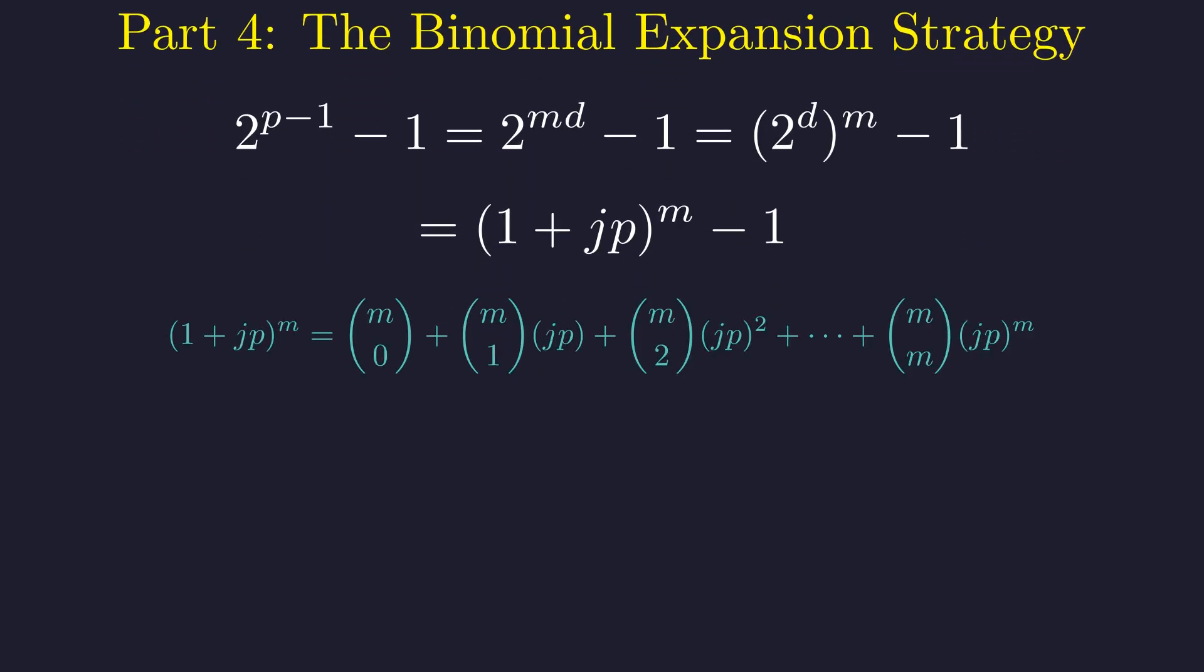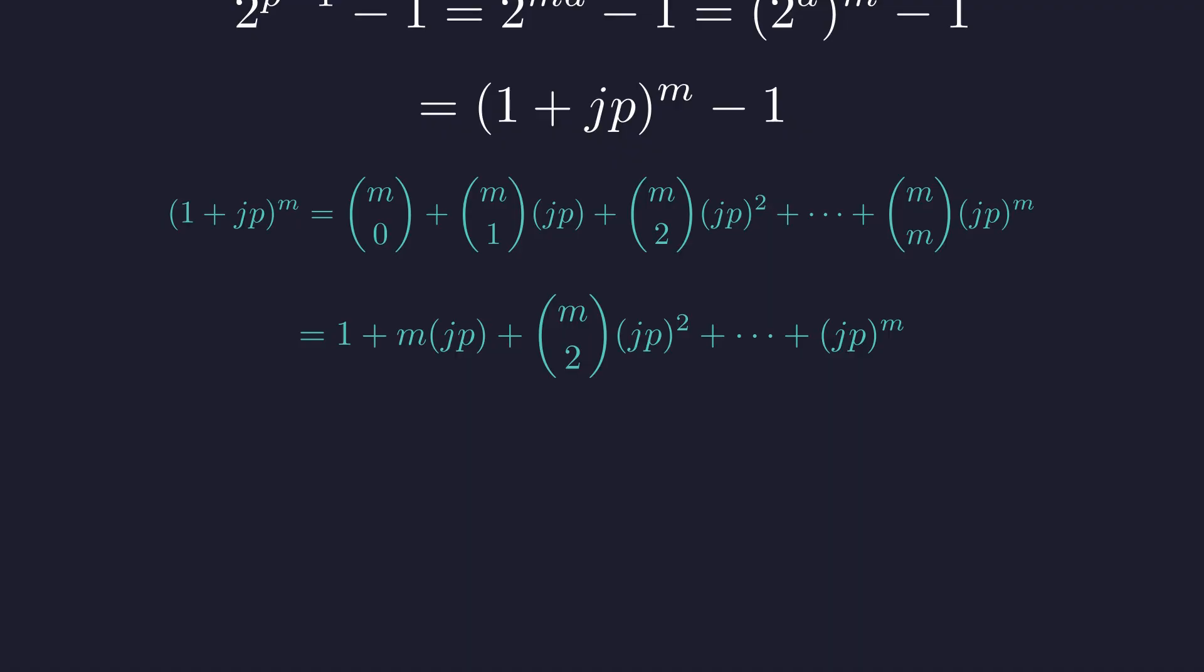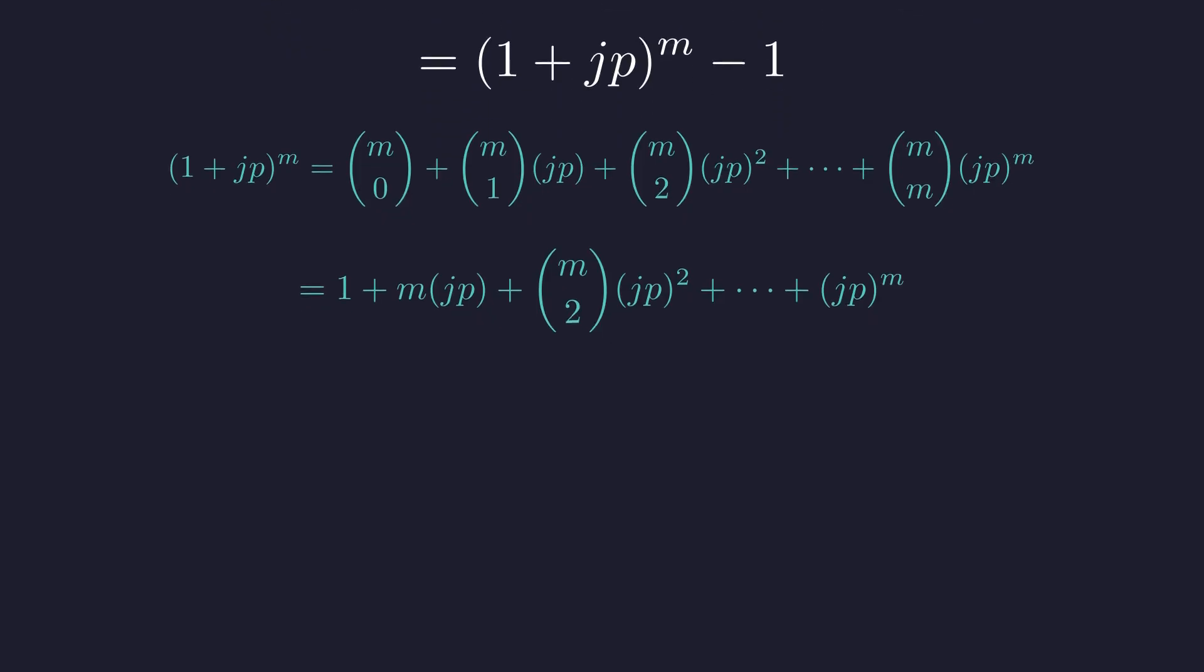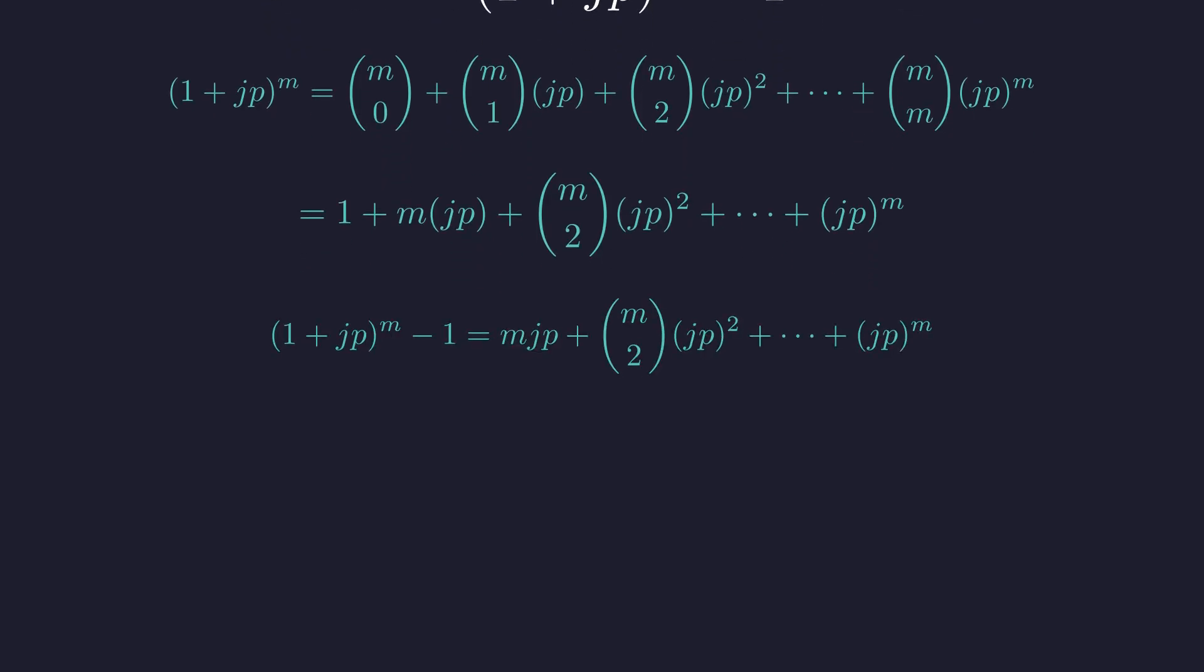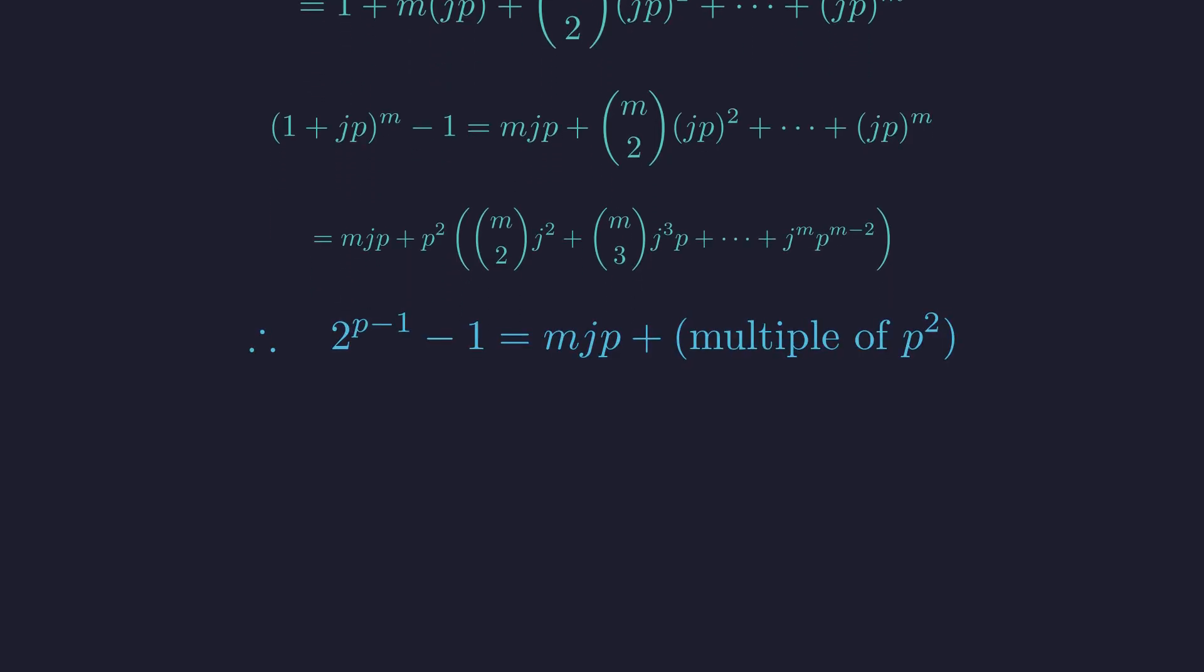The binomial theorem gives us this expansion. Each term involves jp raised to increasing powers. Evaluating the first two binomial coefficients, m choose 0 is 1, and m choose 1 is m. Subtracting 1 eliminates the first term, leaving us with this expression. We can factor out p squared from all terms except the first, giving us this form. Therefore, our target expression has this elegant structure. A term involving m, j, and p plus something divisible by p squared.